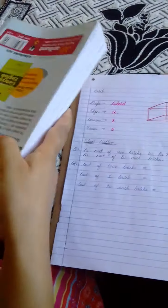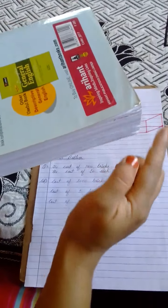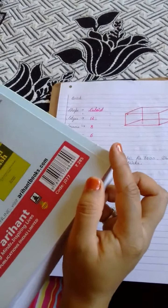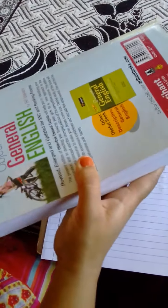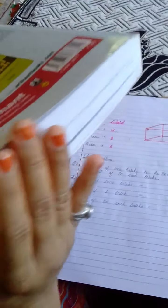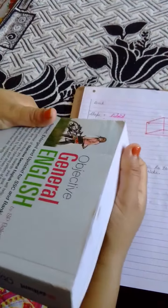Next is corners. How many corners does it have? Eight. One, two, three, four, five, six, seven and eight. And last is faces. So it has six faces. First face, second face, third, fourth, fifth and sixth.